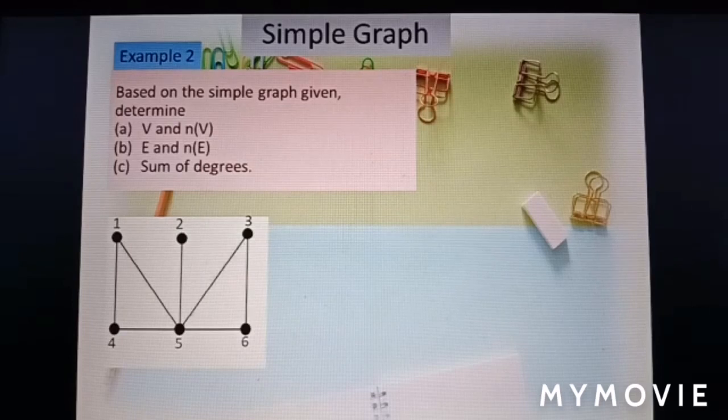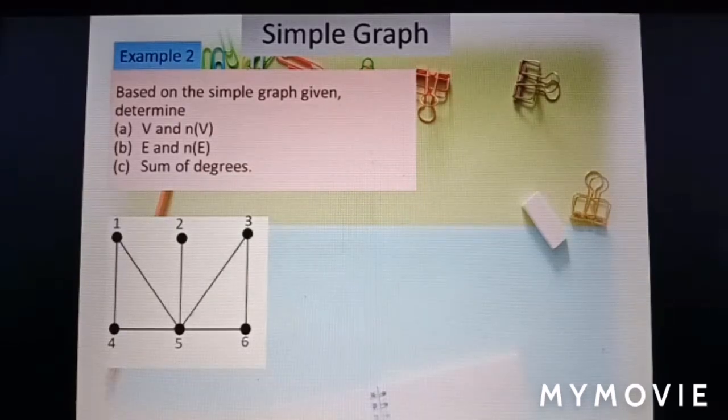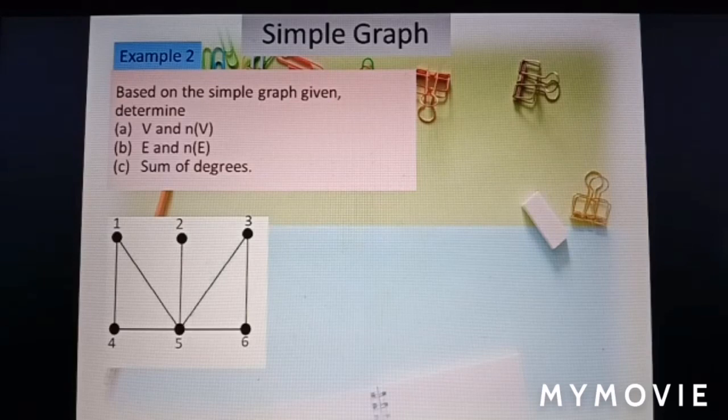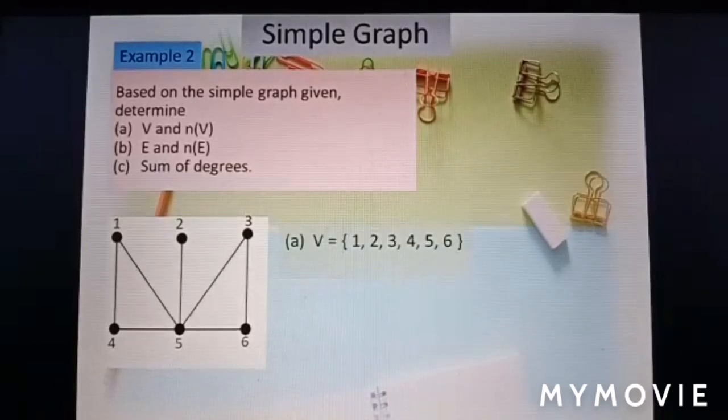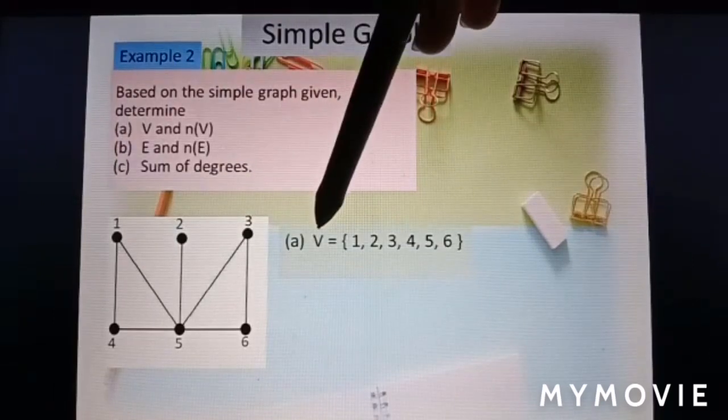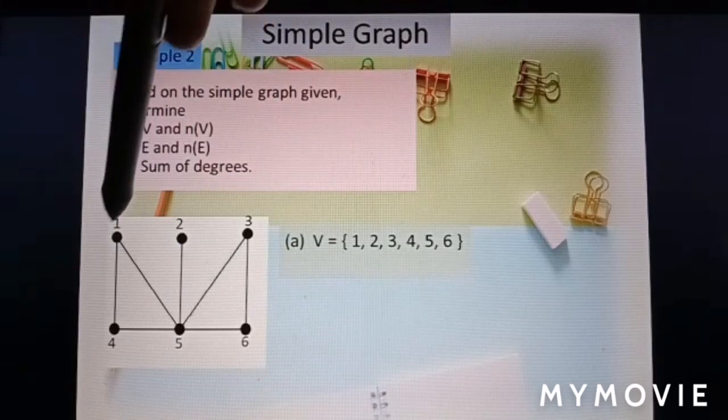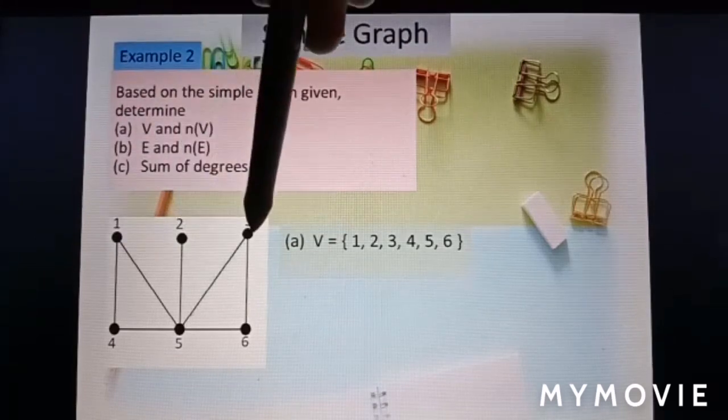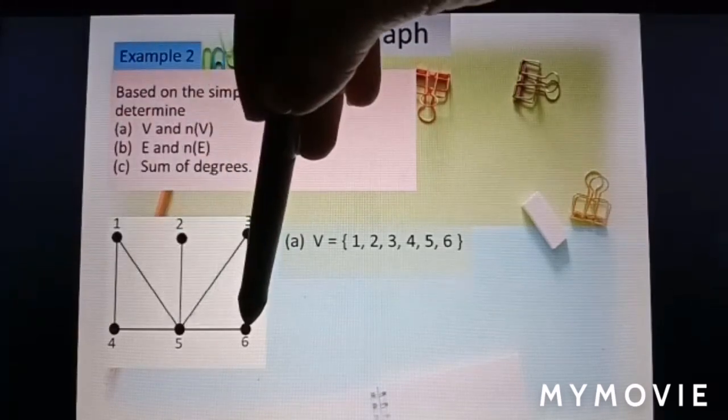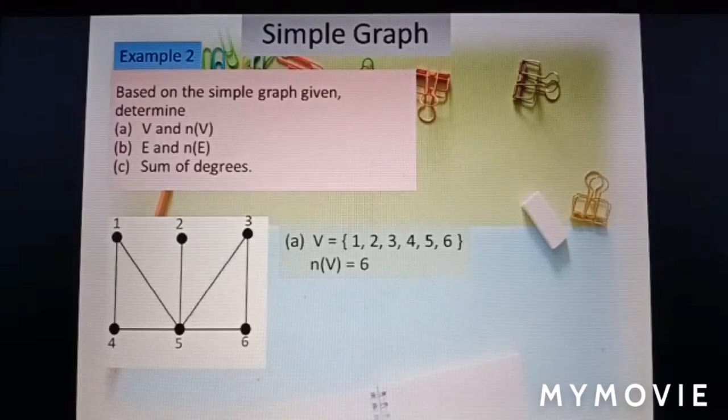Now we look at example 2. Based on the simple graph given, determine V and number of V. Set of vertices is 1, 2, 3, 4, 5, and 6. Number of vertices is 6.